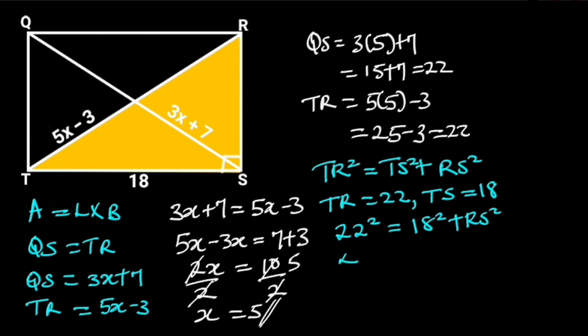22 squared is 484. 18 squared is 324. So, 484 is equal to 324 plus RS squared. Making RS squared the subject will give us RS squared is equal to 484 minus 324.